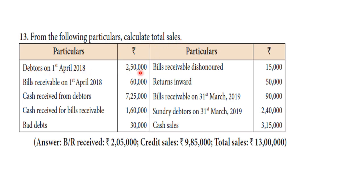Debtors on 1st April 2018: 2,50,000. Bills receivable on 1st April 2018: 60,000. Cash received from debtors: 7,25,000. Cash received for bills receivable: 1,60,000. Bad debts: 30,000. Bills receivable dishonoured: 15,000. Returns inward: 50,000. Bills receivable on 31st March 2019: 90,000. Sundry debtors on 31st March 2019: 2,40,000. Cash sales: 3,50,000.